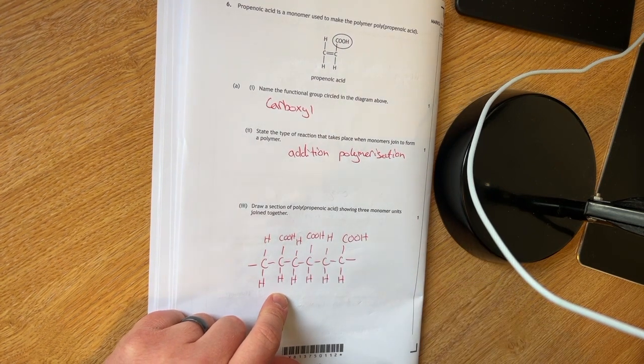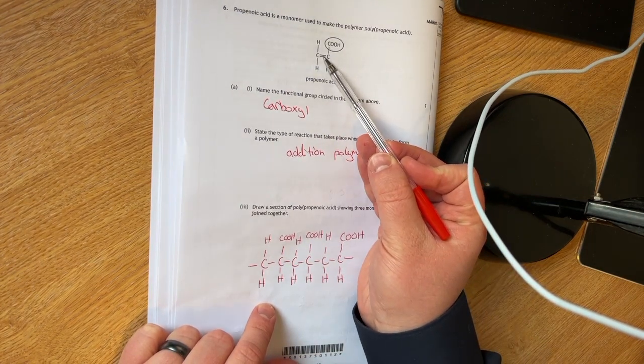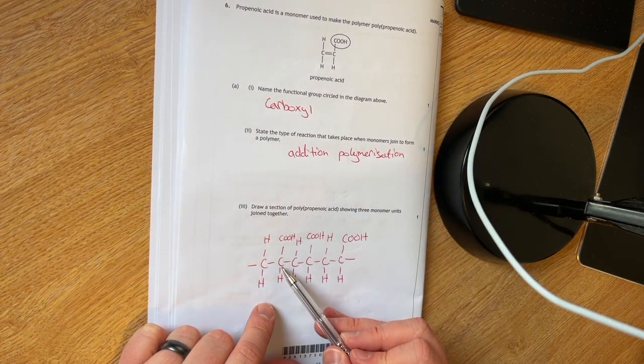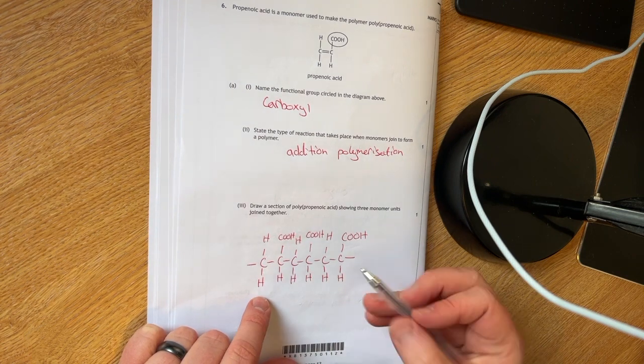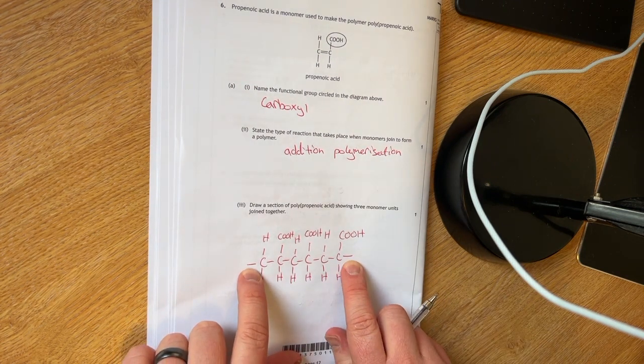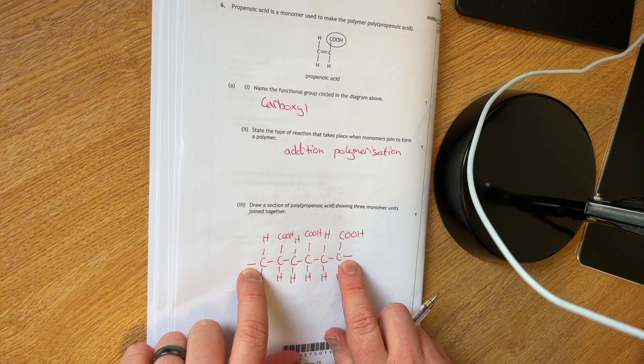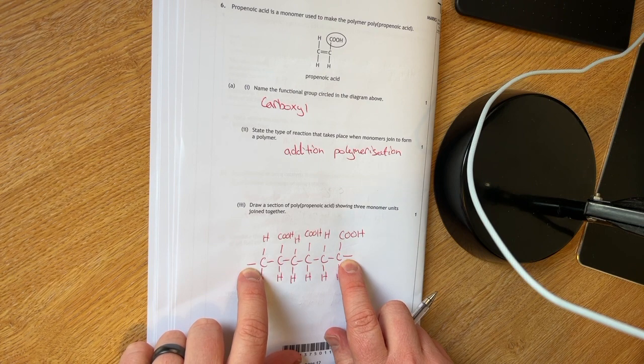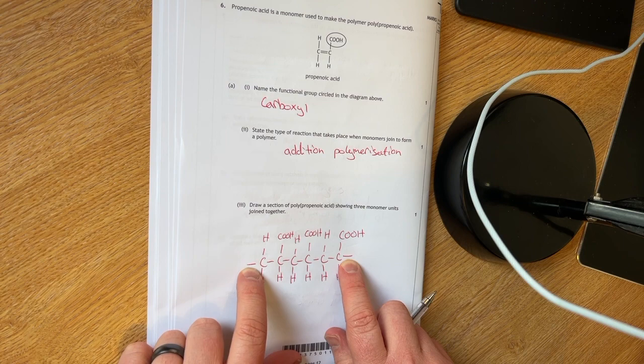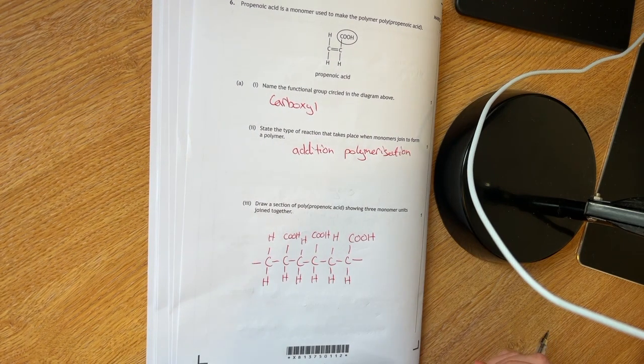You are to draw a section of the polymer showing the three monomer units joined together. You need to just draw three of these with the double bond taken out, joined up. And there needs to be two of the bonds on either end here. If I remember rightly from past marking schemes, they probably won't accept your answer if you haven't placed the bonds on either end.